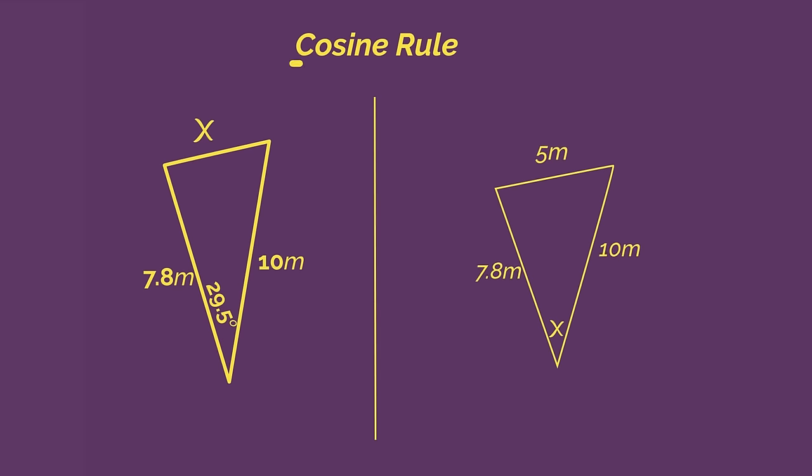Whereas the cosine rule can either have all three sides given or side, angle, side.